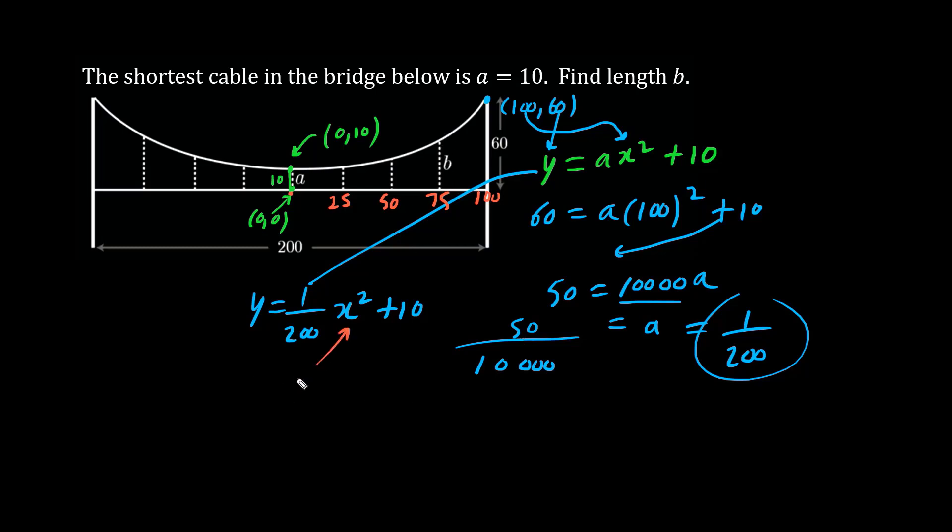So when x equals 75, let's find the height, let's find the y value over here to determine what b is. Y equals 1 over 200 times 75 squared plus 10. And the result is 38.125 or 305 divided by 8.